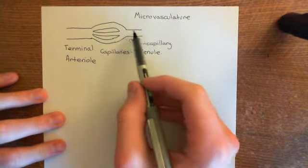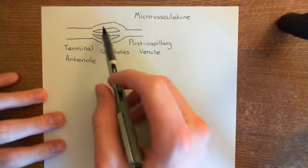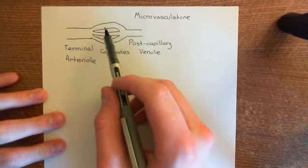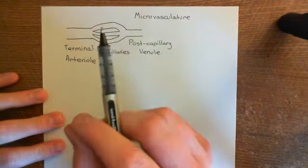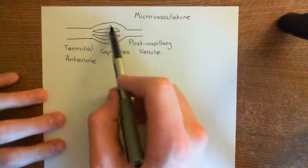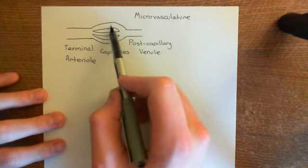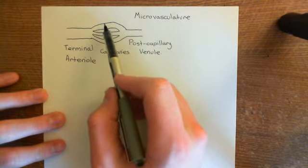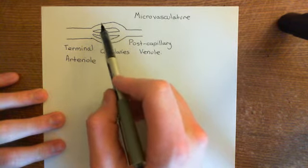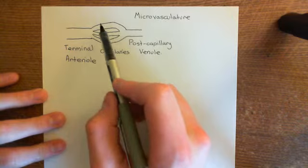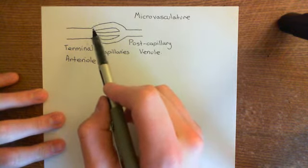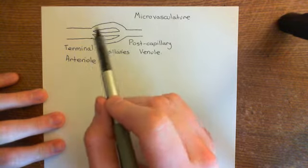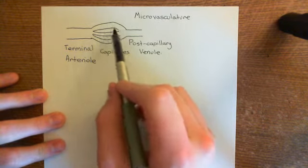Capillaries and post-capillary venules have extremely simple walls. Capillaries are one cell thick — just wide enough for a single red blood cell. The wall consists of only an endothelial cell sitting on a basement membrane. Post-capillary venules are bigger than capillaries but have the same simple wall structure.